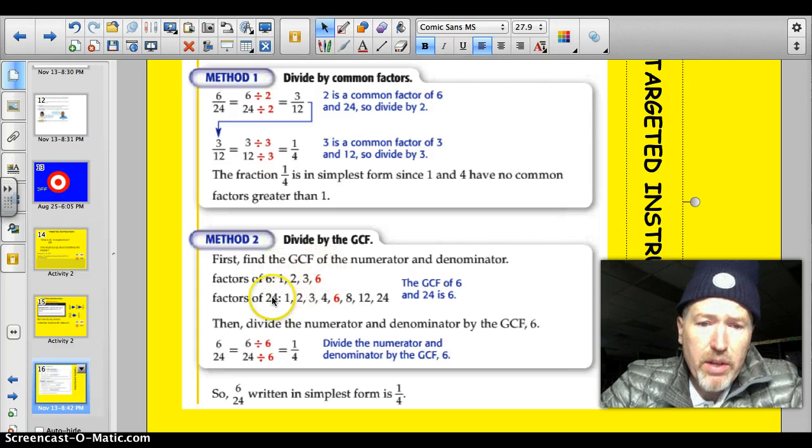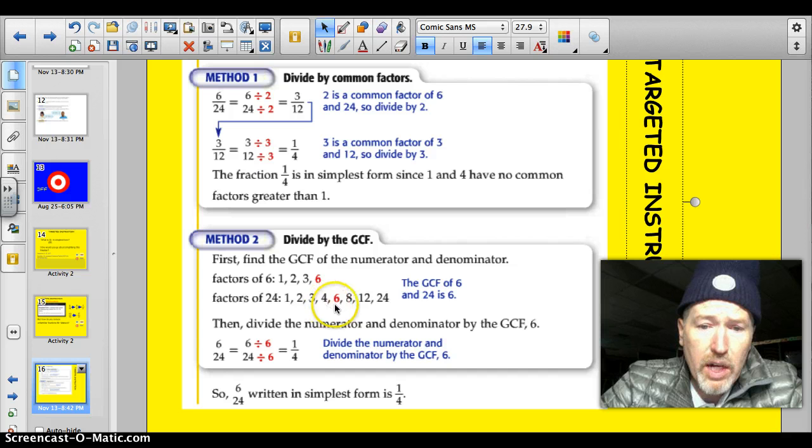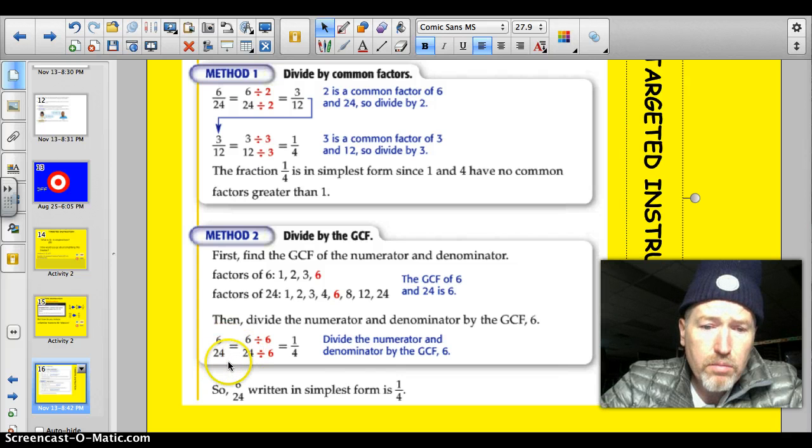Knowing what the greatest common factor is, like down here, where they took and actually factored out. Here are all the factors of 6: 1, 2, 3, 6. And here are all the factors of 24. And then looking and seeing that that greatest common factor is actually 6. They were able to reduce in one swift movement here.